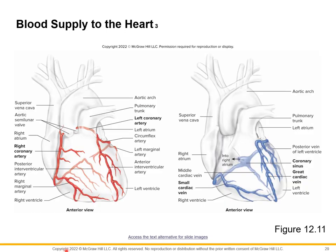This slide highlights all of the arteries and veins discussed on the previous slides, showing the gross anatomical positioning of the arteries and veins located on the surface of the heart.